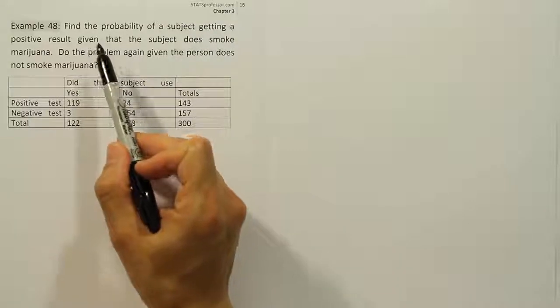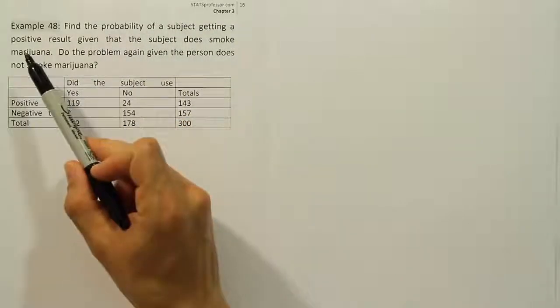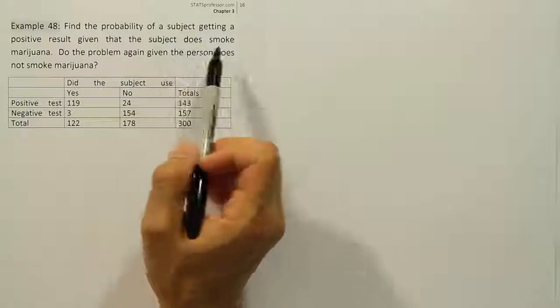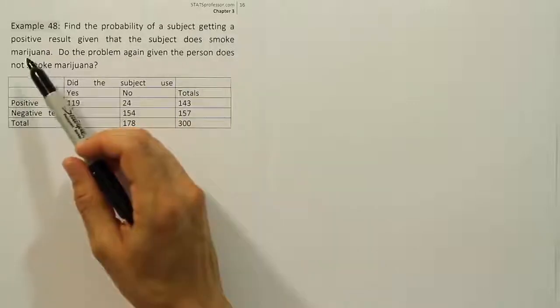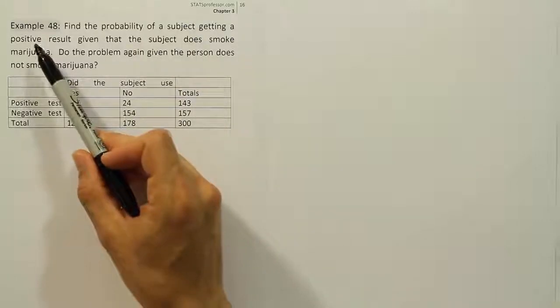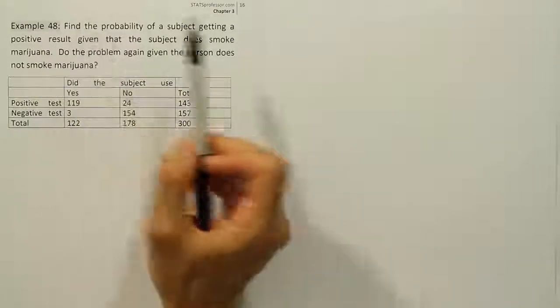And the probability we're finding is the probability the subject gets a positive result on a drug test given that the subject does smoke marijuana. So if the person does smoke marijuana, then of course a positive result here would just be confirming what's true. So we're asking what's the chance the test catches them smoking marijuana.